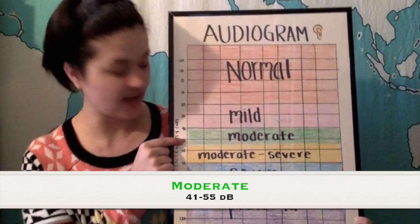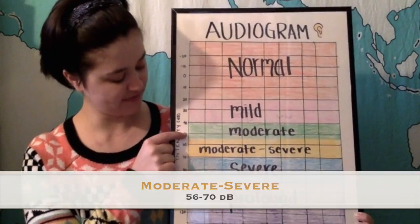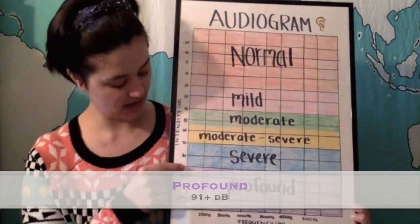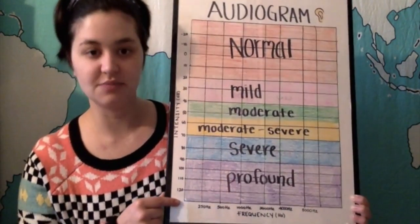From 40 to 55, a moderate hearing loss. From 55 to 70, moderate to severe. 70 to 90, severe. And 90 and above is profound.